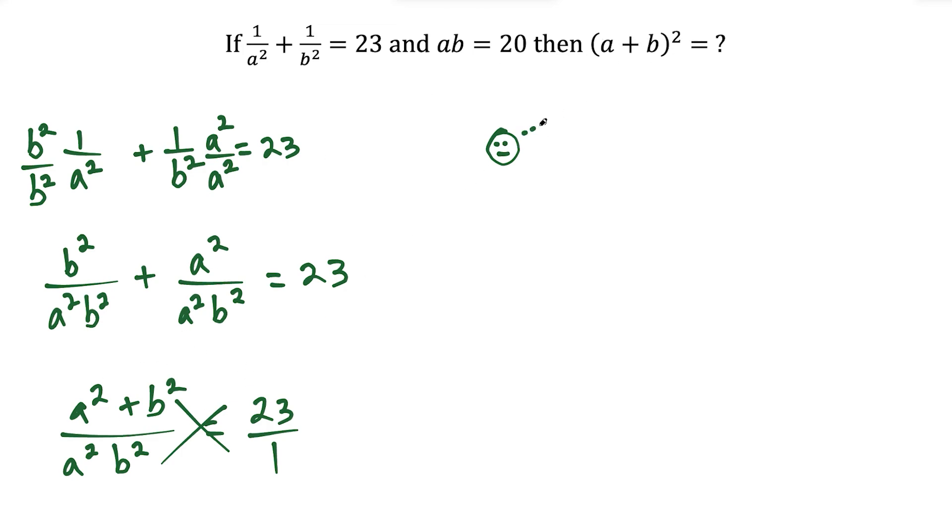And I could see the connection now. So if we were to expand a plus b squared, this would give us a squared, plus there would be b squared at the end, but there's also going to be a middle piece.